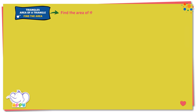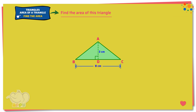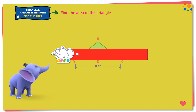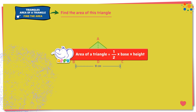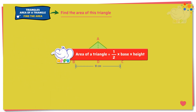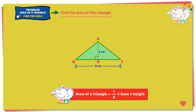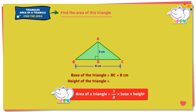Find the area of this triangle. Area of a triangle equals 1 by 2 times base times height. Base of the triangle equals BC equals 8 cm. Height of the triangle equals AD equals 3 cm.